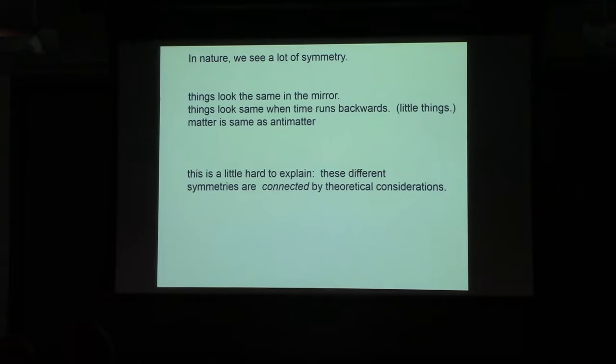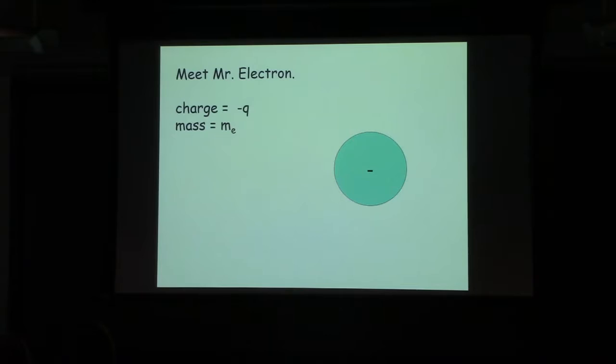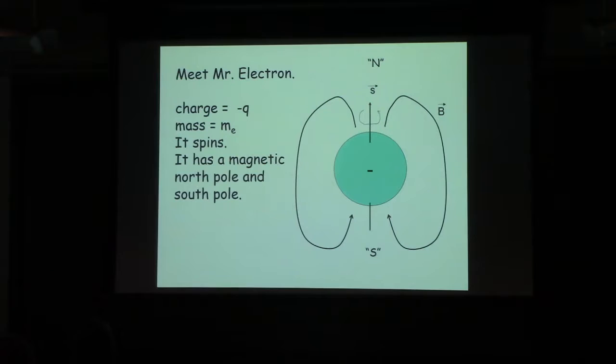In our experiment, and interestingly, I do this experiment jointly with Jun Ye here. So you get sort of a double dose of Jun Ye. This particular experiment is a two-professor experiment. In our experiment, we use the electron. Here's Mr. Electron, charge of minus one, mass of whatever it is. It spins, therefore it's got a magnetic moment, a North Pole and a South Pole. Really, the symmetry question we want to ask is, are the North Pole and the South Pole the same? Other than one's the North Pole and the South Pole magnetically. Is there any other difference?